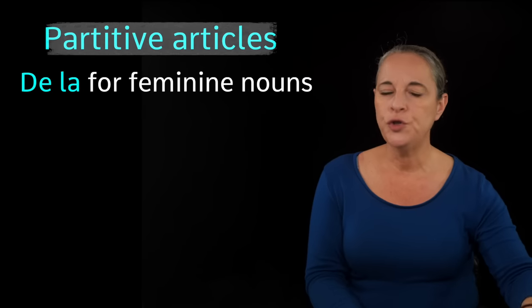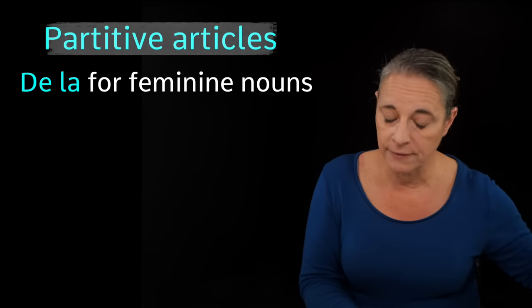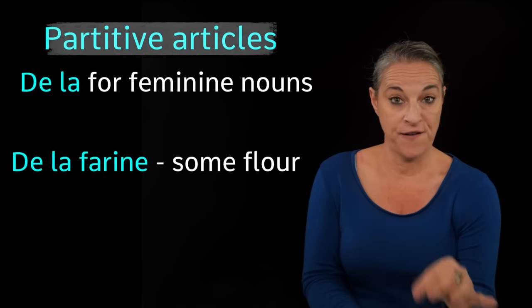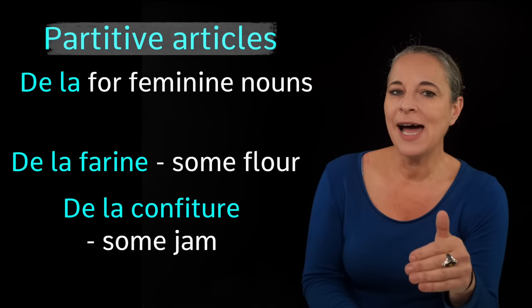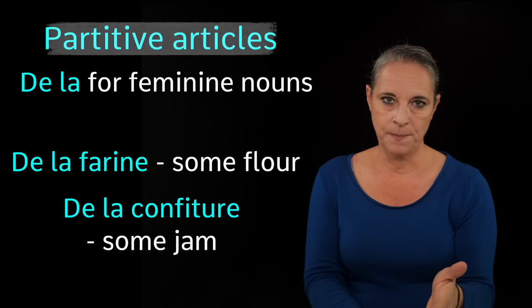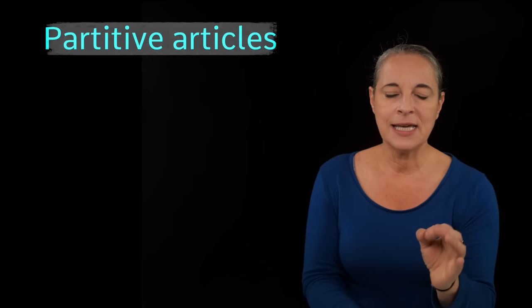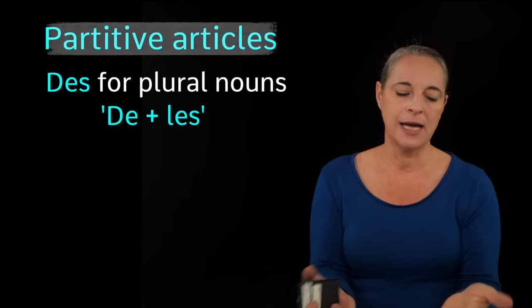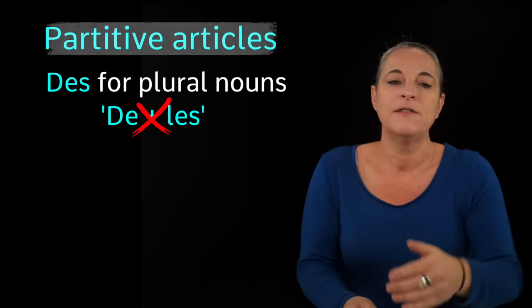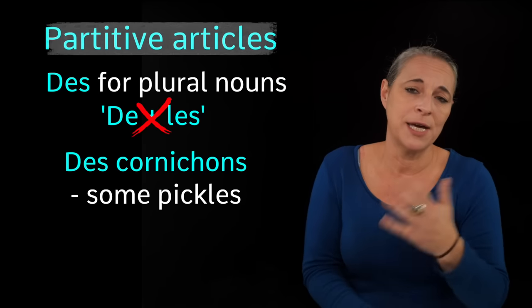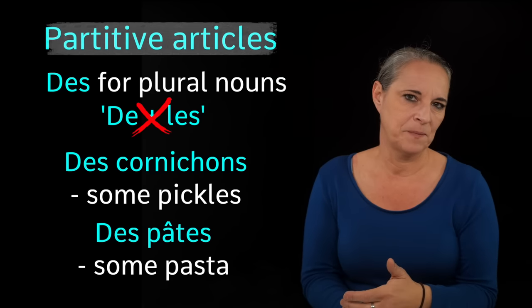For feminine nouns, we would say de la. There is no contraction here, unlike the masculine noun. So we say de la farine — some flour — or de la confiture — some jam. And to finish, des — D-E-S — is the partitive of de les, contracted because we can't say de les. For example, des cornichons — some pickles — or des pâtes — some pasta. One thing you need to watch out for is that while you can omit 'some' in English, such as 'I want some cake' or 'I want cake', you cannot do it in French. You must have an article in front of the noun, or your sentence will lose its meaning.